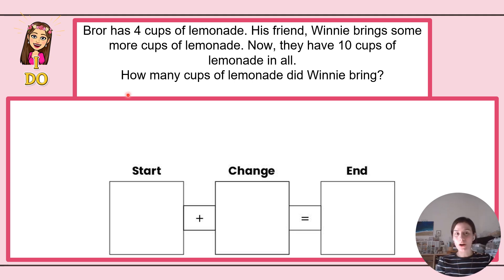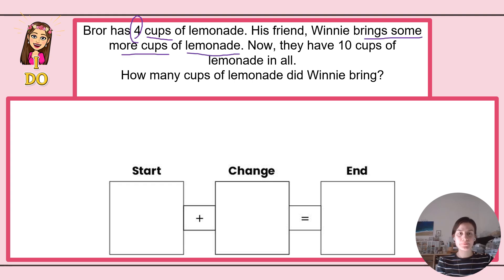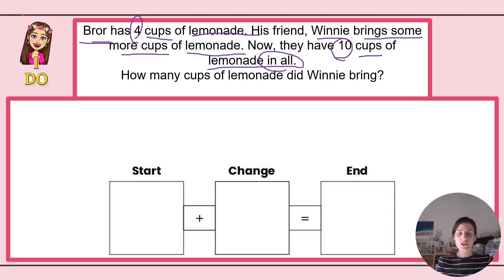Step one: understand it. I need to read the problem. Broar has four cups of lemonade. His friend Winnie brings some more cups of lemonade. Now they have 10 cups of lemonade in all. How many cups of lemonade did Winnie bring? So let's go ahead and underline and circle what is important in this word problem. Broar has four cups of lemonade. His friend Winnie brings some more cups of lemonade — we don't know how much, but we just know that she brings more. Now they have 10 cups of lemonade in all.